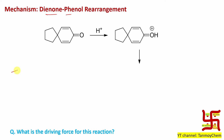Diene means two double bonds, that's why it is diene. It is attached with a carbonyl, so it is dienone. And by the way, it is attached with a five-member ring.